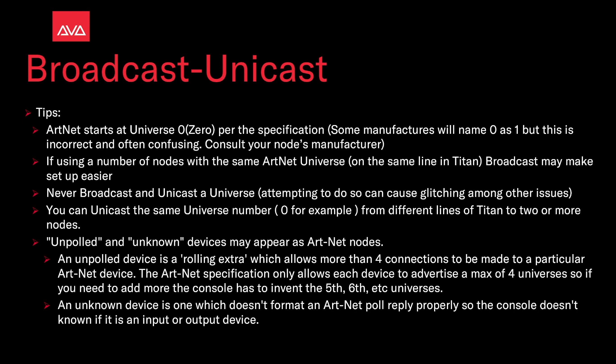You can unicast the same universe number — universe 0, for example — from different lines of Titan to two or more nodes. Unpulled and unknown devices may appear as Artnet nodes. An unpulled device is a rolling extra, which allows more than 4 connections to be made to a particular Artnet device. The Artnet specification only allows each device to advertise a maximum of 4 universes, so if you need to add more, the console has to invent the 5th, 6th, etc. An unknown device is one which doesn't format an Artnet poll reply properly, so the console doesn't know if it is an input or output device.